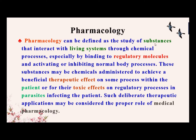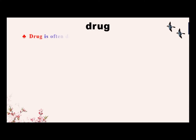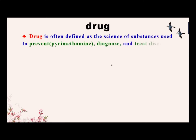What is a drug? Drug is often defined as a substance used to prevent, diagnose, and treat disease. To treat disease is easier to understand. To prevent — for example, pyrimethamine could prevent people from suffering from malaria.